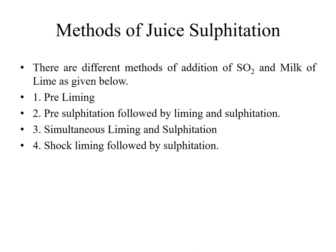There are different methods of juice sulfitation: first is pre-liming; second is pre-sulfitation followed by liming and sulfitation; third is simultaneous liming and sulfitation; and the last is shock liming followed by sulfitation.